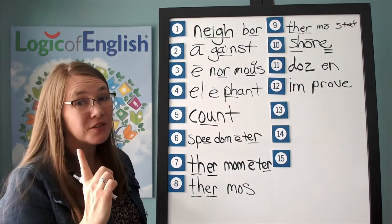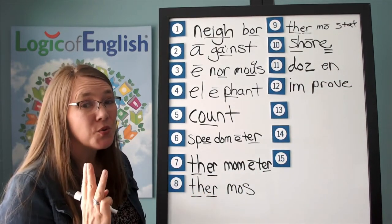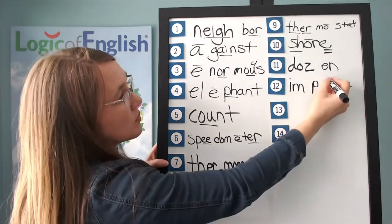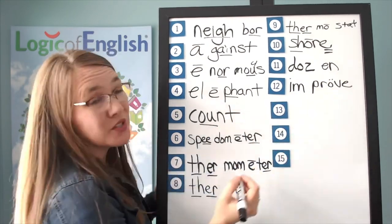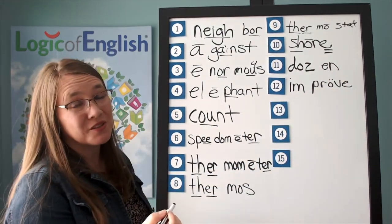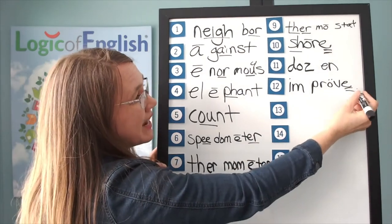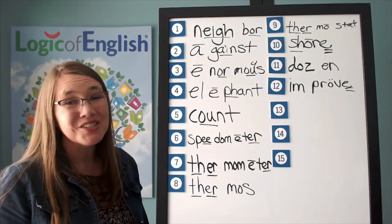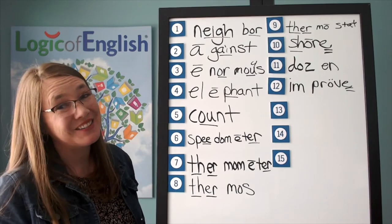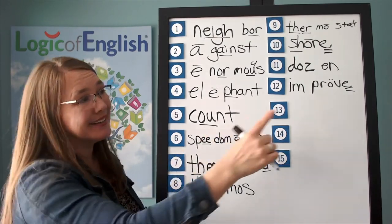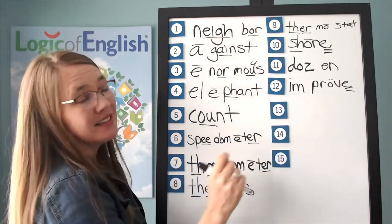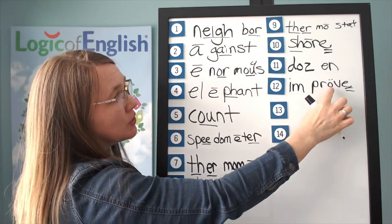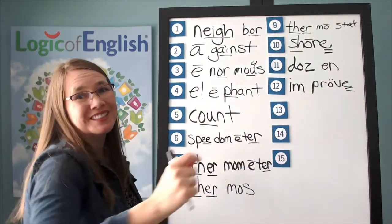How do we mark it? What sound of A-O-U do you hear in IMPROVE? The broad sound. So we'll put two dots over it. Why do we have a silent E in IMPROVE? English words do not end in V or U, therefore add an E. I-M-P-R-U-V. Improve. Great.